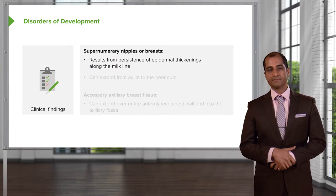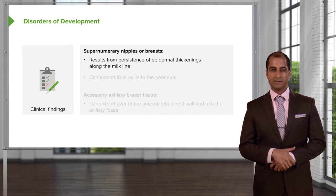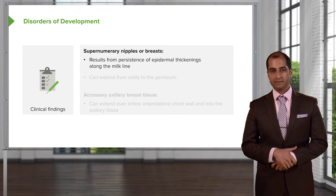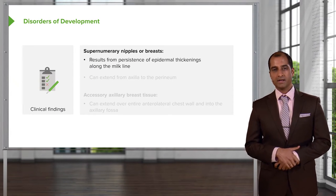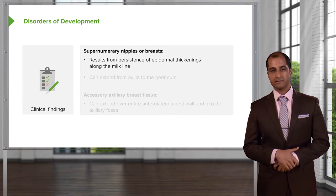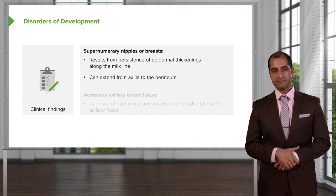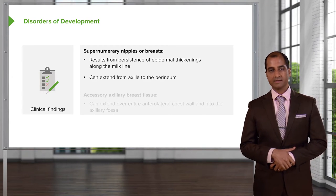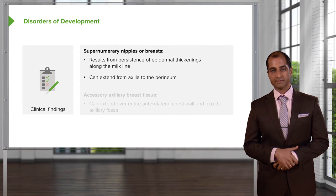We'll begin our topic of breast pathology by looking at developmental disorders. Here we have supernumerary nipple or breast. What ends up happening here results from persistence of epidermal thickening along the milk line. It can extend from the axilla to the perineum. This is referred to as your supernumerary nipple or breast.